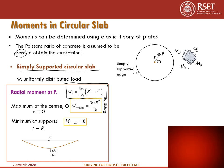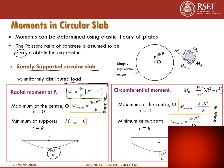The radial moment varies with maximum sagging moment 3wR²/16 at the center and zero at the support. The circumferential moment M_theta has expression 3wR²/16 at maximum (at center, r = 0) and minimum value 2wR²/16 at the support — both sagging. The entire bending moment diagram is sagging, as expected for a simply supported slab, so steel is provided at the bottom.